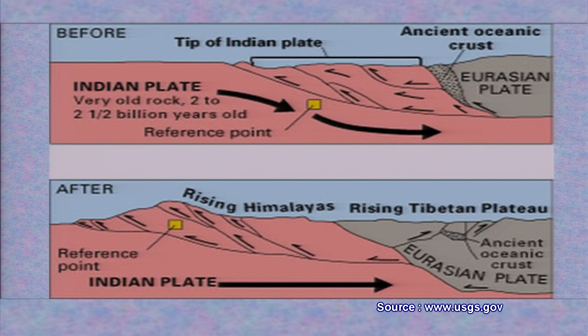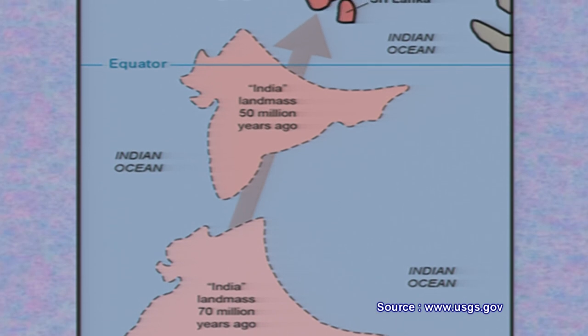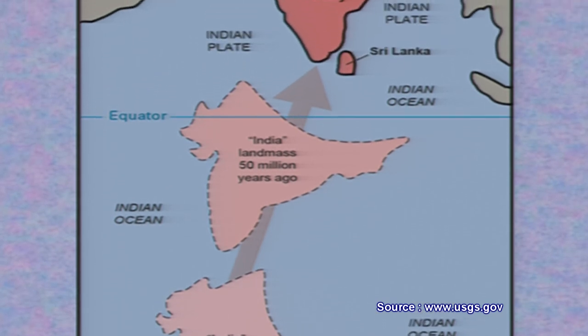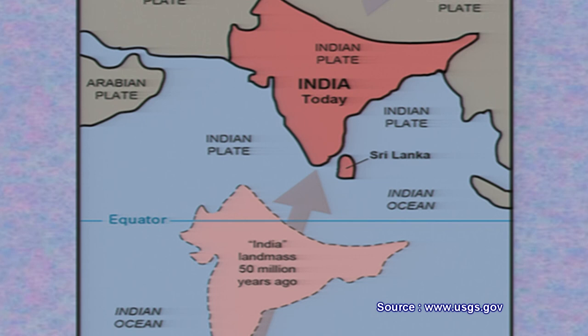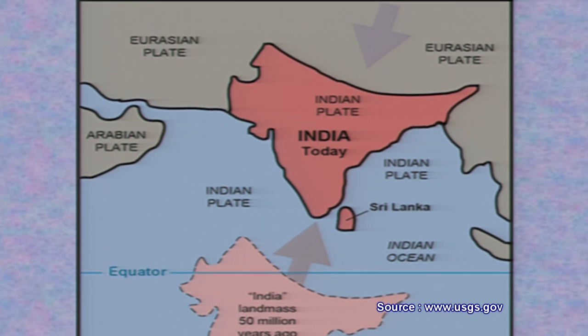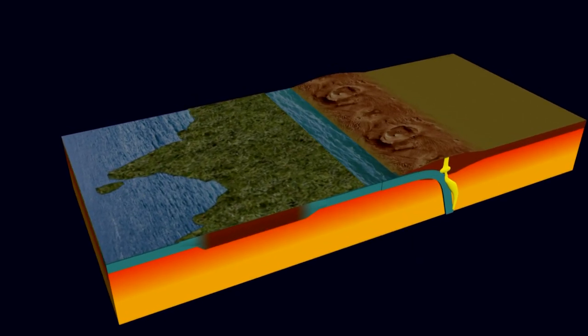The Eurasian plate extends from Europe, but we are immediately the neighbours of Tibet and China. So the use of Tibetan plate or Chinese plate in place of Eurasian plate is perfectly alright. This shows the movement of the Indian peninsula towards the north as the arrow indicates — the movement taking place from south towards north — and the present position of India is shown in dark pink colour.